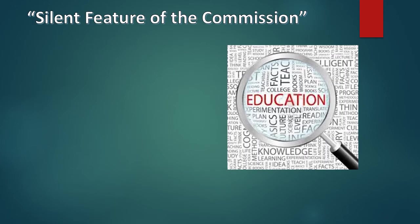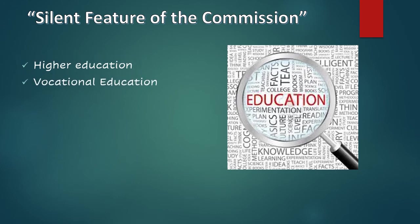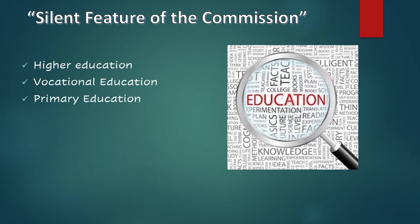Now, regarding the salient features of the commission: the first salient feature was that higher education was given importance and made necessary. The second was vocational education — for example, village teachers who were uneducated were to be given vocational training such as sewing machine operation and similar skills. Primary education was also made compulsory and very necessary.